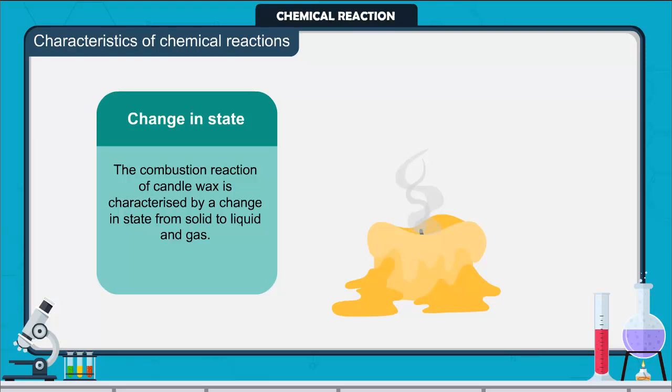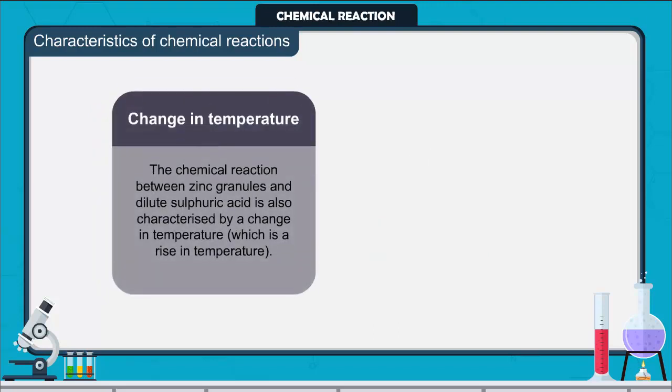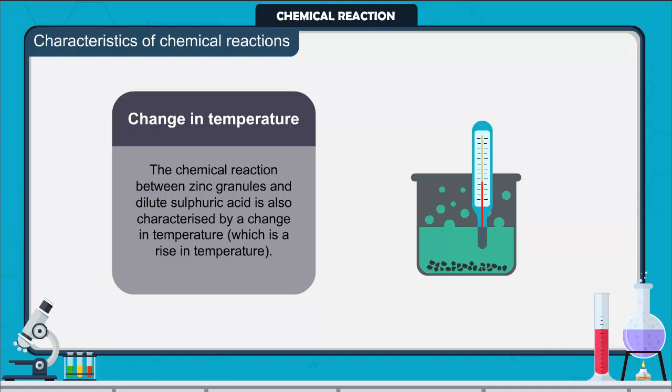There are some chemical reactions which can show more than one characteristic. Change in temperature: The chemical reaction between zinc granules and dilute sulfuric acid is also characterized by a change in temperature, which is a rise in temperature.